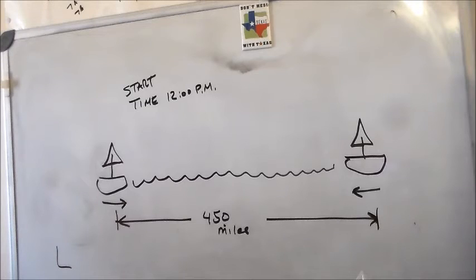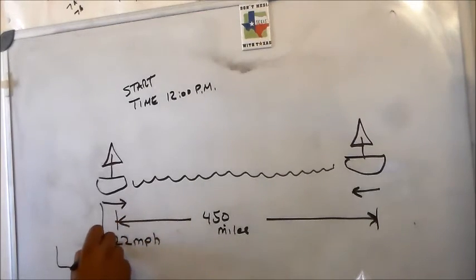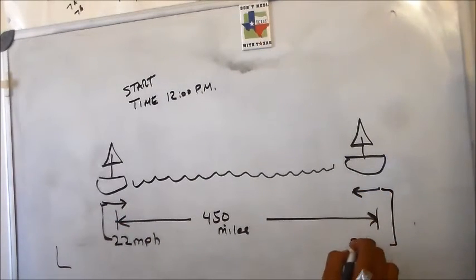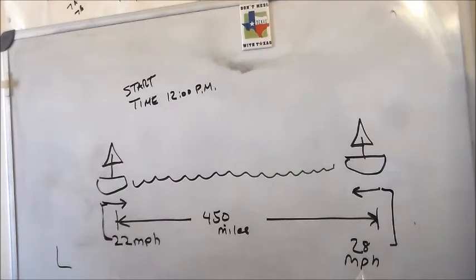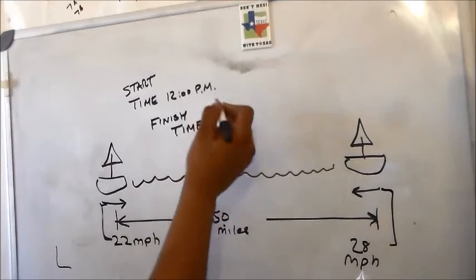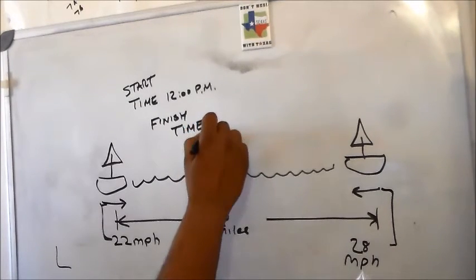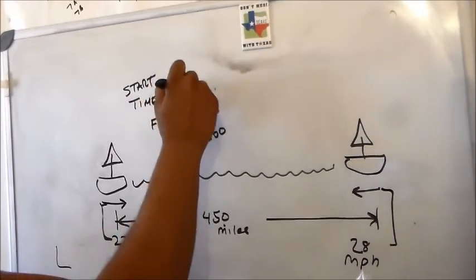They just so happen to be 450 miles apart. They travel towards each other at 22 and 28 miles per hour respectively. So boat one, 22, 28, and it can be either one. You can make this guy 22, you can make this guy 28. It doesn't matter as long as you label 122, 128. We want to know how many miles they're going to be apart at 8 o'clock. So I will put finish time here.